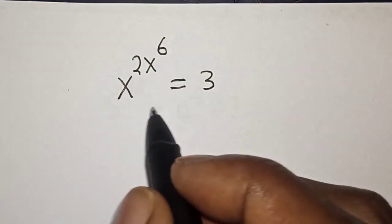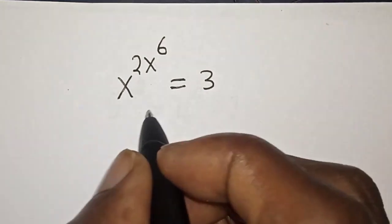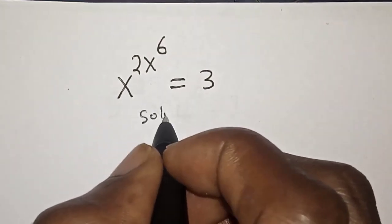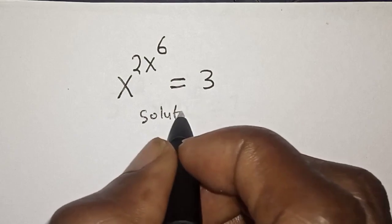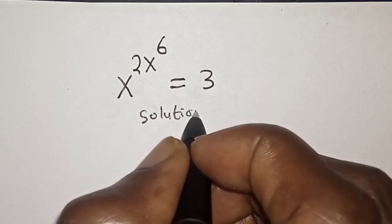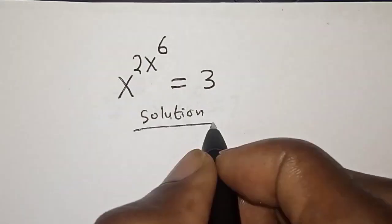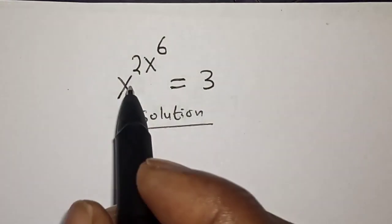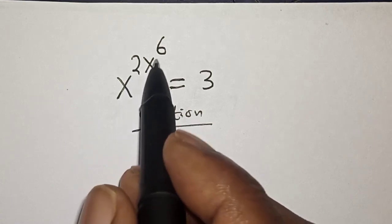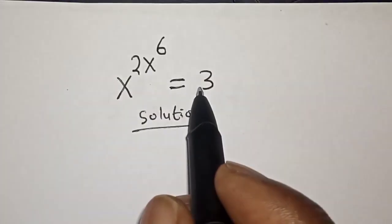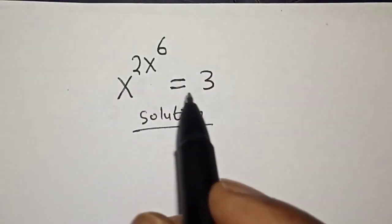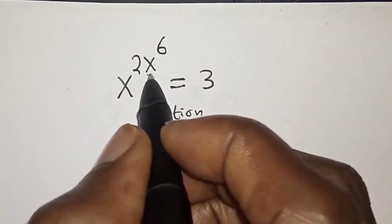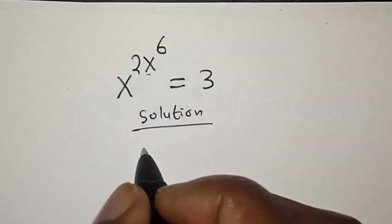Please don't forget to like, share, comment and subscribe. Solution: we have s raised to power 2, s raised to power 6 is equal to 3. Then let s raised to power 6 be equal to a.